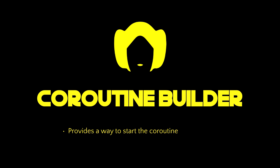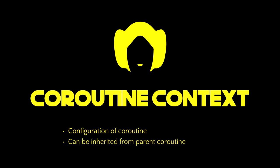Every coroutine runs in a context — it might be the default one, something else, or it might be inherited from the parent. The latter makes the cancellation of child coroutines a real breeze. The context just specifies things related to the running of the coroutine, like the dispatcher, which controls the threads that the coroutine will run and then later resume on.